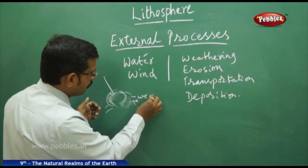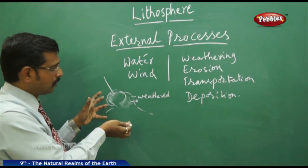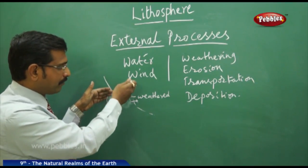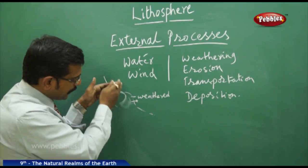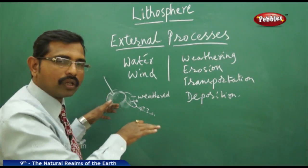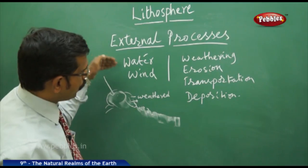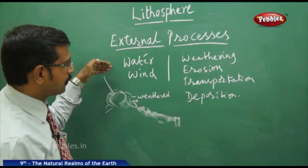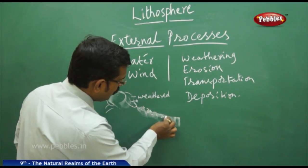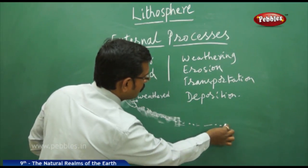This is called a weathered rock, where cracks form. Then, due to atmospheric forces like air and wind, the rock is eroded from the top into smaller particles, and due to external forces like river water and wind, these weathered particles begin moving from one area to another.